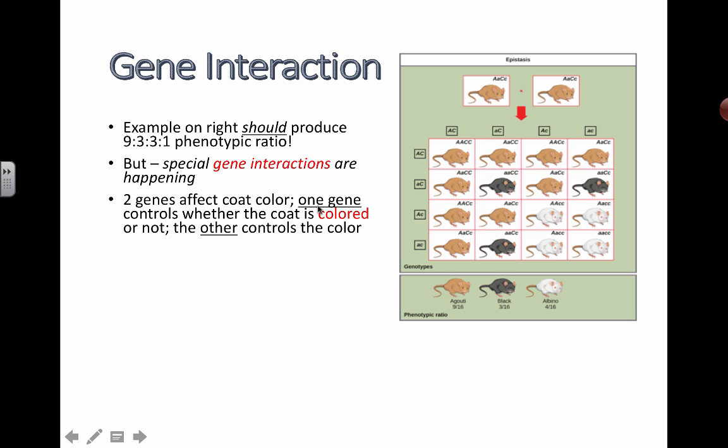One gene controls whether the coat has any color or not, and the other controls the actual color. So try to pause the video right now, and before I tell you which of these letters, A or C, actually codes for which of these two, see if you can pause the video and figure out if A is controlling the coat color or if A is controlling whether the coat is actually colored or not. Please try it out.